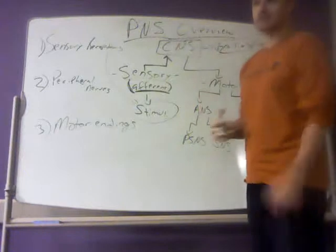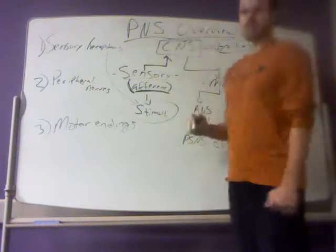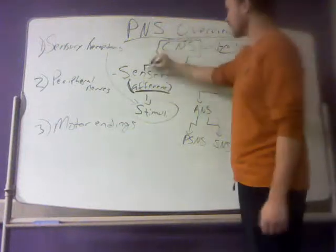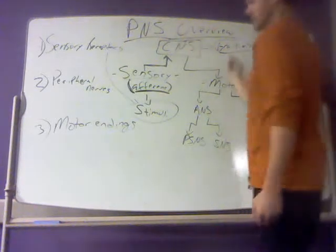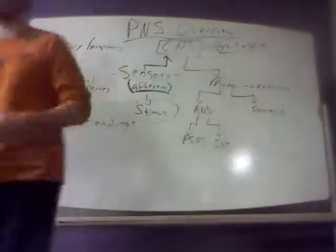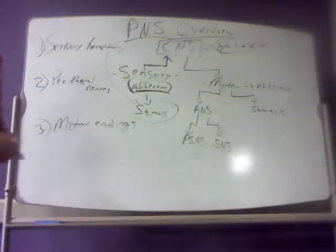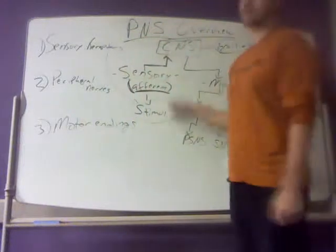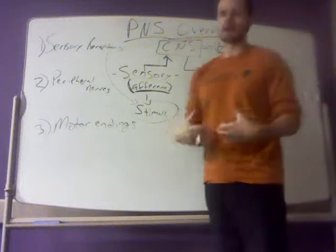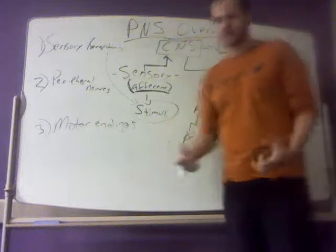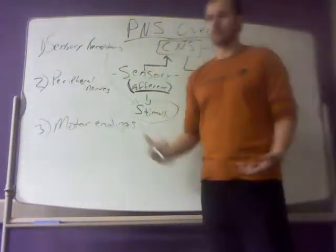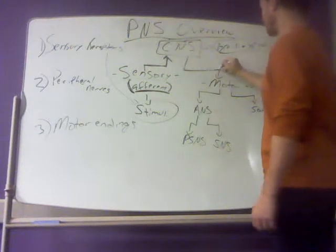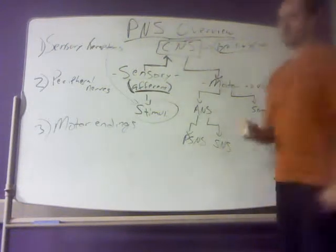The sensory system sends information about changes in our environment to the central nervous system. The CNS is constantly receiving, integrating, and interpreting this sensory information. Then it plans out a response, because we have to be able to respond to these stimuli. If we're unable to properly respond to stimuli, that's disease — we get sick. If we can't regulate our homeostasis and self-regulate on our own, we're going to need medical intervention. So the central nervous system will plan out an appropriate response and send action potentials out through the motor aspect of the peripheral nervous system.